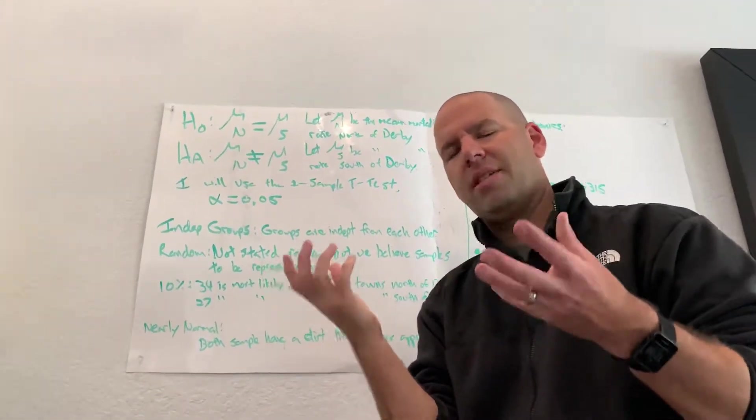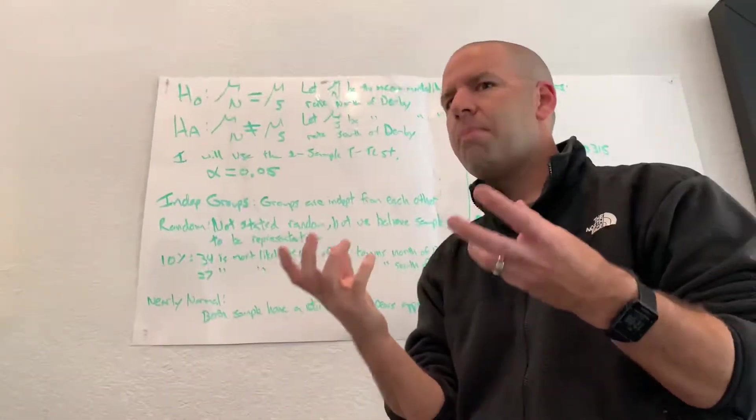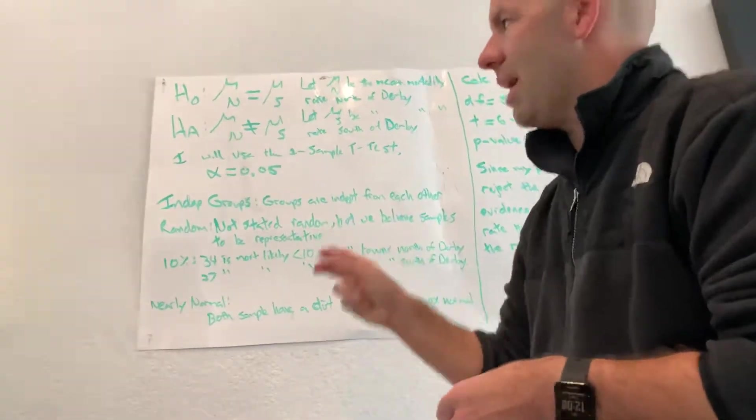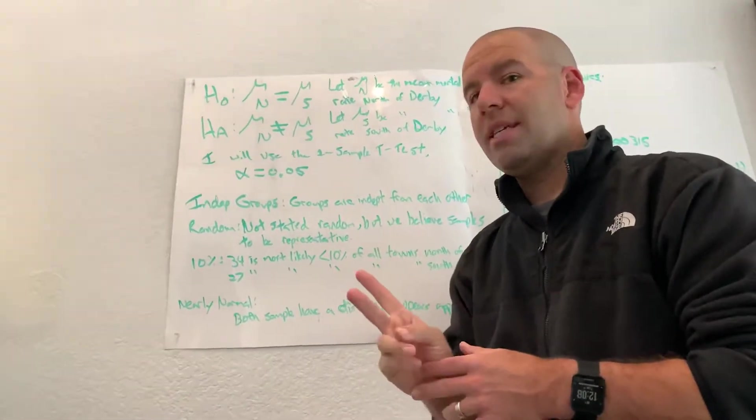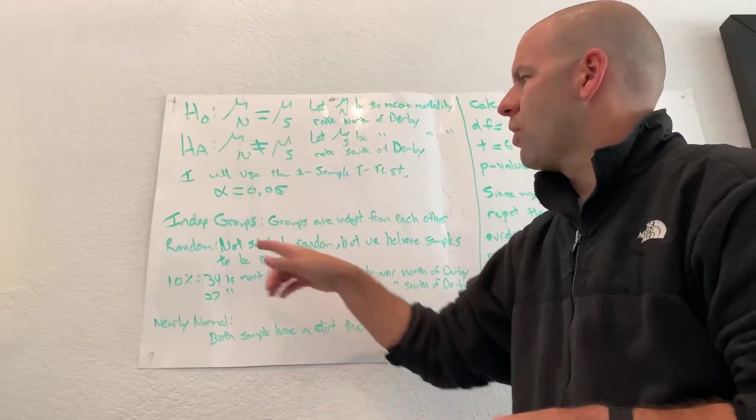The groups are independent from each other. The towns north of Derby and the towns south of Derby aren't influencing each other, so they are independent from one another. So that is why it is a two-sample t-test and not a paired t-test.